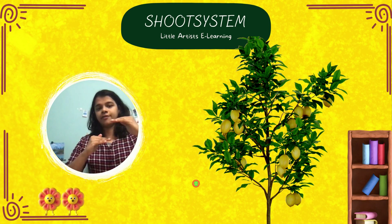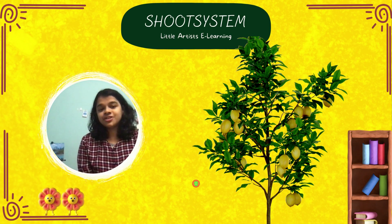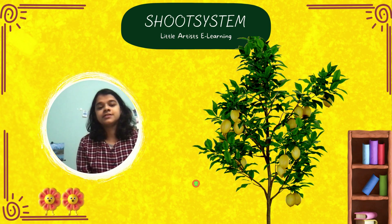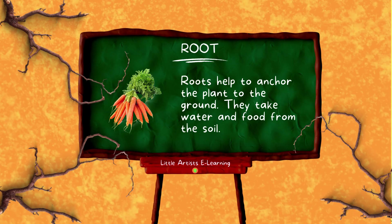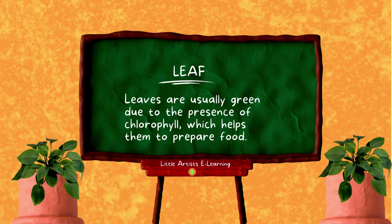The shoot system consists of stem, branches, leaves, flowers, fruits, and seeds. Roots help to anchor the plant to the ground and take water and food from the soil. The stem is the stock of the plant — it helps the plant to stand upright.